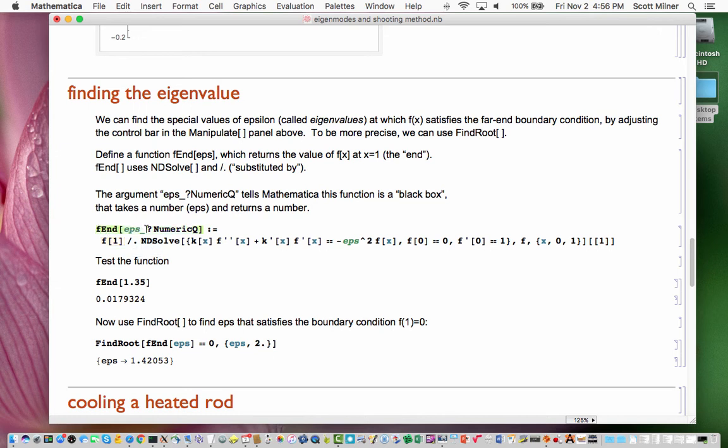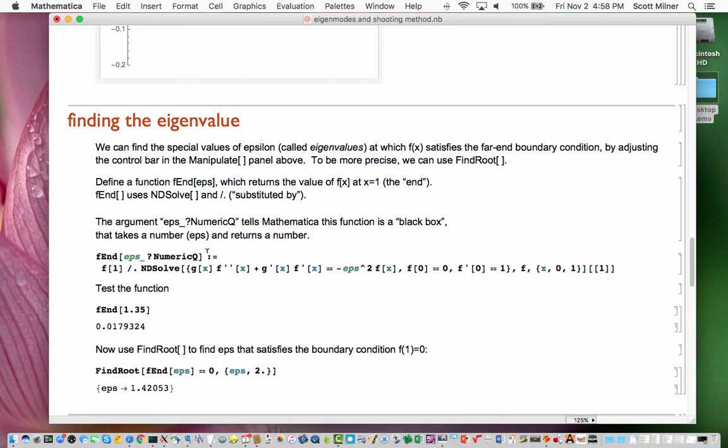Now, I've defined this function in a funny way with this little thing that says numeric q here with a question mark. And what that does is a little bit technical, but basically it's an instruction to Mathematica that this function should be regarded as kind of a black box, as having only numerical arguments and that Mathematica shouldn't try to do things like take derivatives of this function or things like that. And that turns out to be important for using it in conjunction with find root.